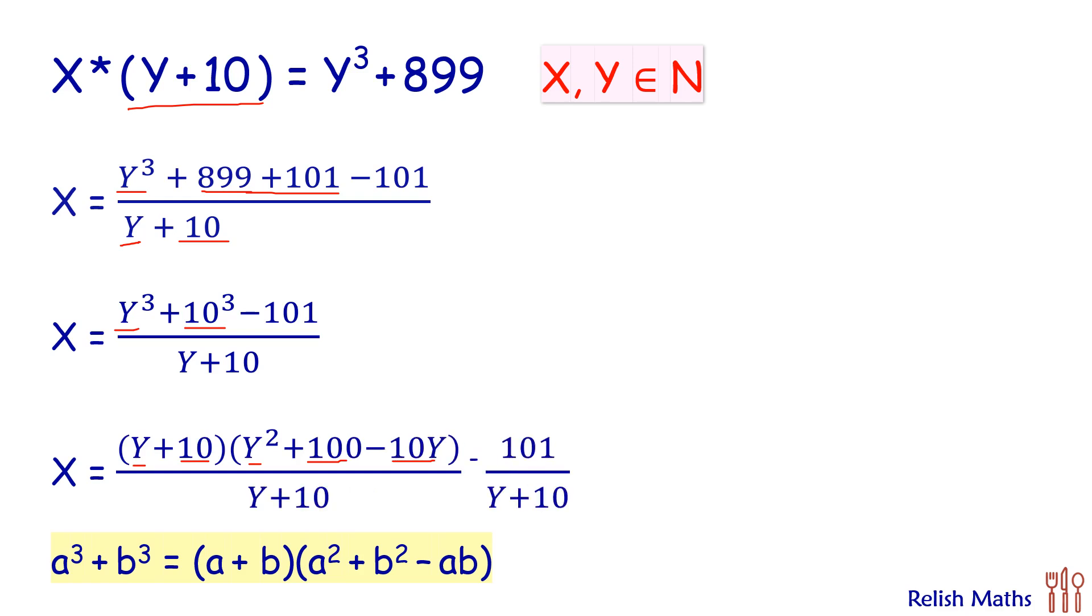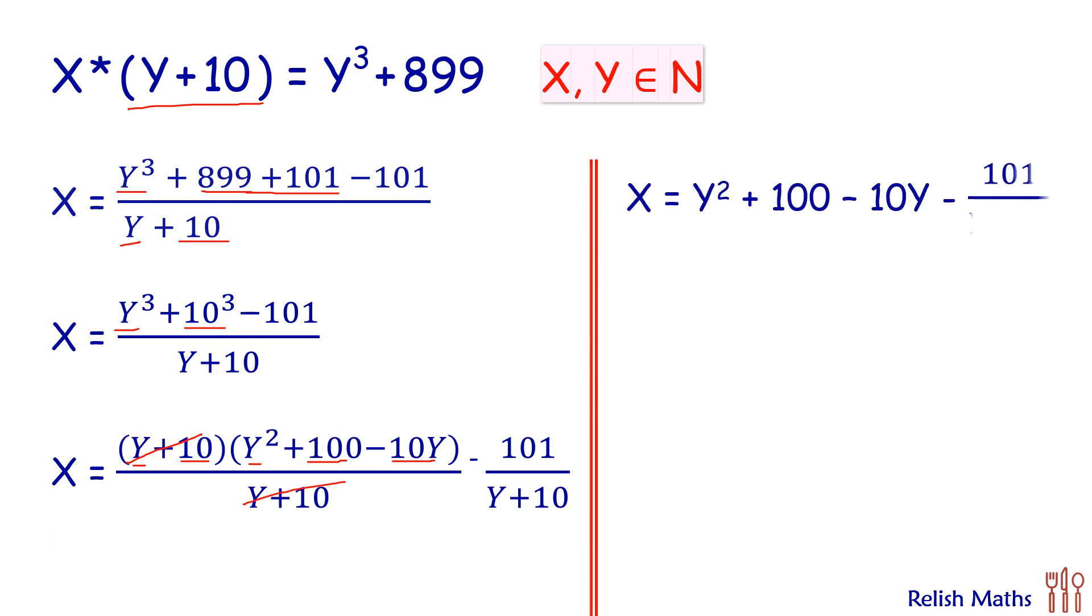The first term Y plus 10 will get cancelled. So we'll reduce to X equals Y square plus 100 minus 10Y minus 101 upon Y plus 10.